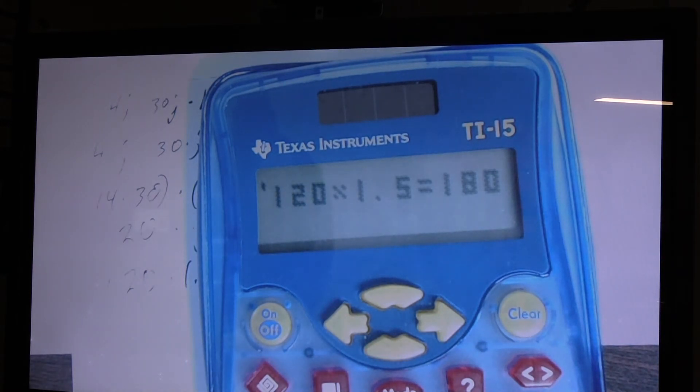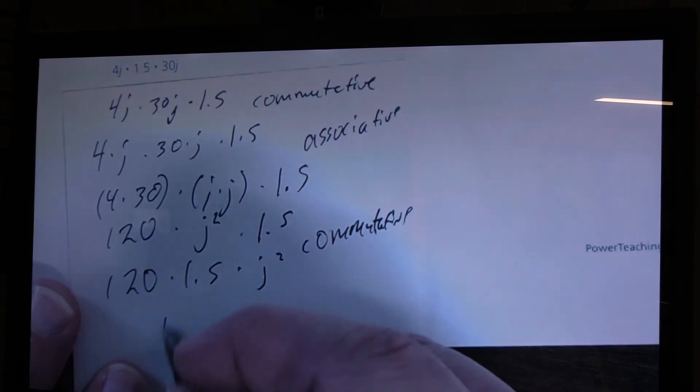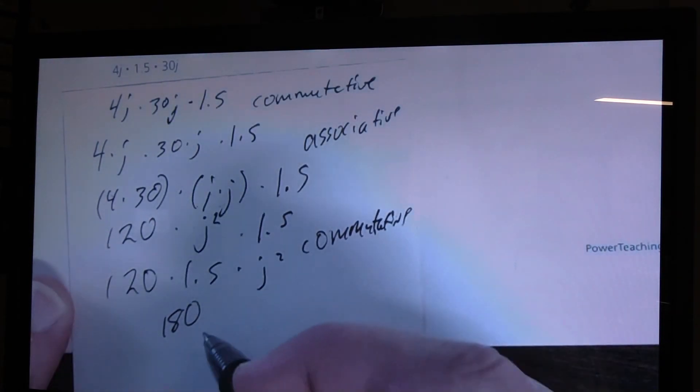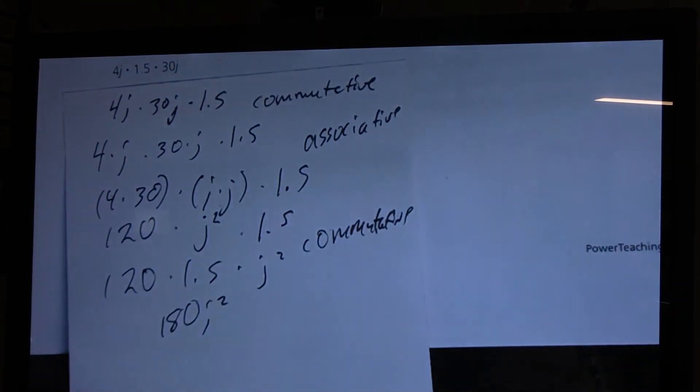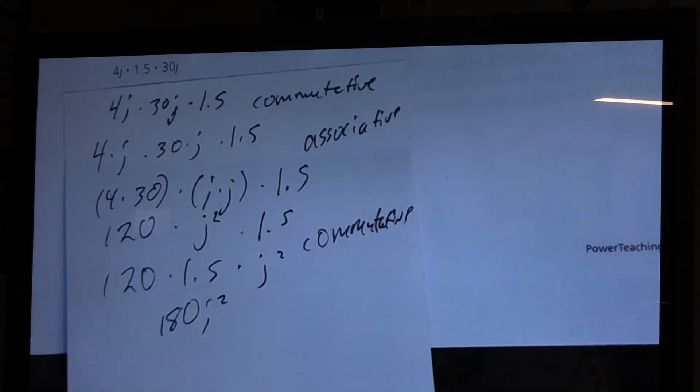And that makes sense to me because 120 times 1 is 120. And then half of 120 is 60. So 120 plus 60, sure enough, would be 180. So that makes sense to me. So I have 180, and then I times it with j squared. I'm going to wind up with 180j squared. So my final answer is this.